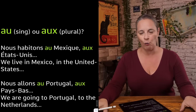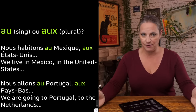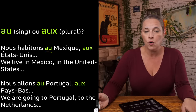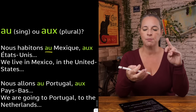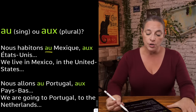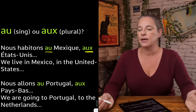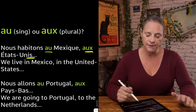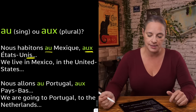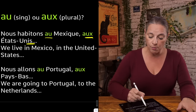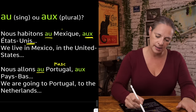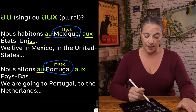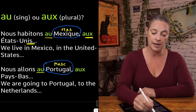What about 'au' and 'aux'? When the country is masculine and doesn't begin with a vowel or an H, you use 'au,' such as Mexique: 'nous habitons au Mexique.' Also 'au Japon,' 'au Portugal.' 'Nous habitons aux États-Unis' — it's A-U-X because we're using a plural here: United States. So we live in Mexico, we live in the United States. 'Nous allons au Portugal' — because Portugal and Mexique are masculine. Pays-Bas, which is the Netherlands, is plural, so we use 'aux.'